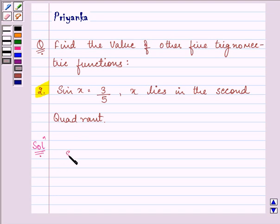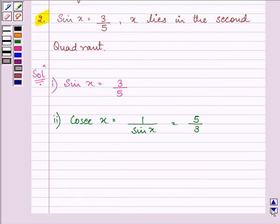We are given the value of sin x as 3 by 5. So we can easily find out the value of cosec x that is 1 by sin x, that means 5 by 3.